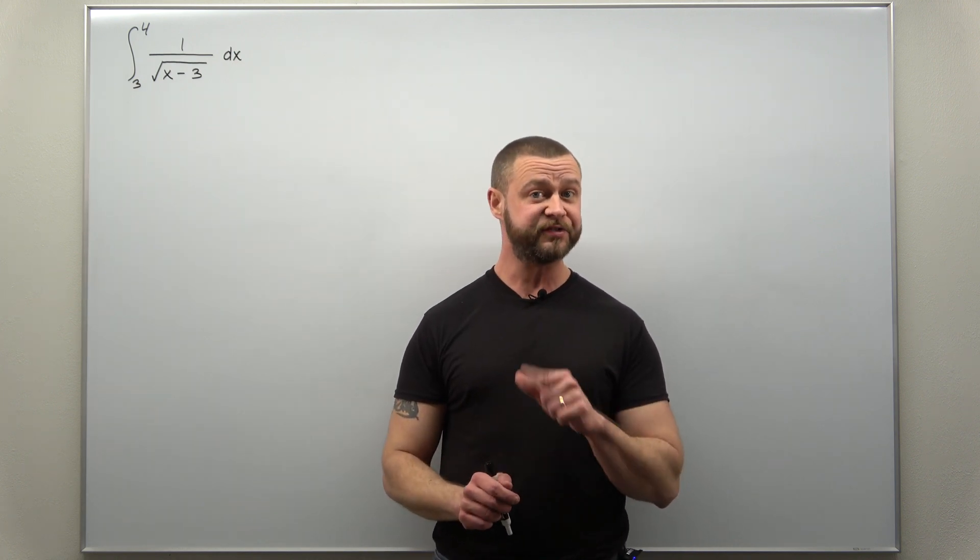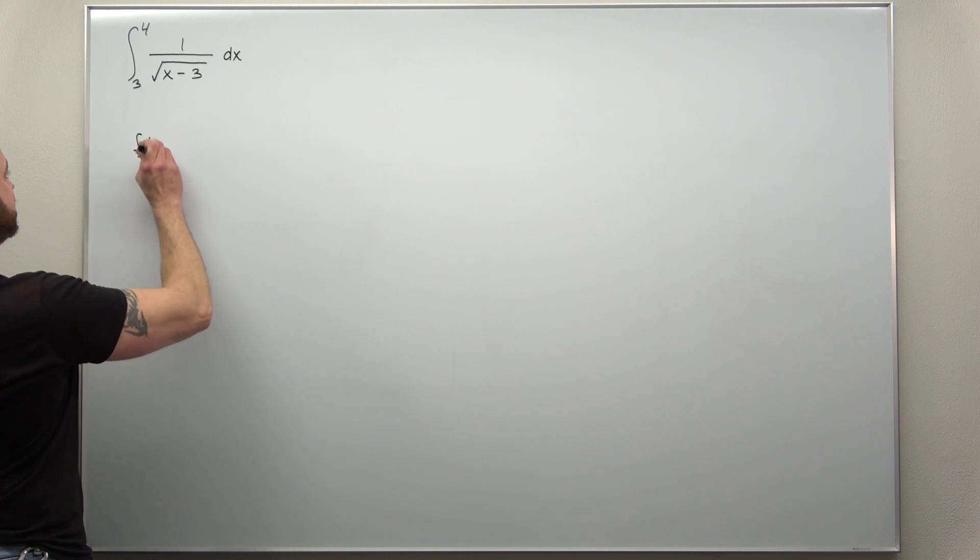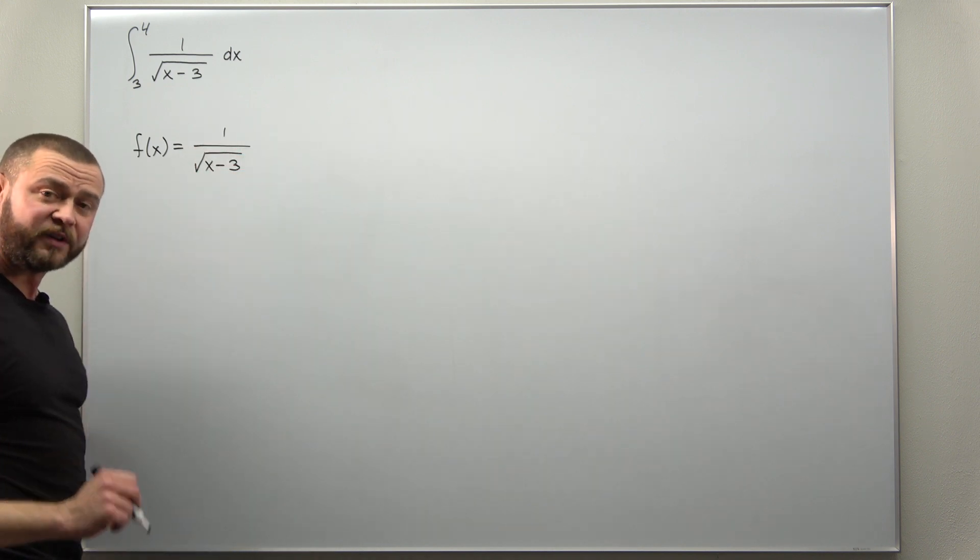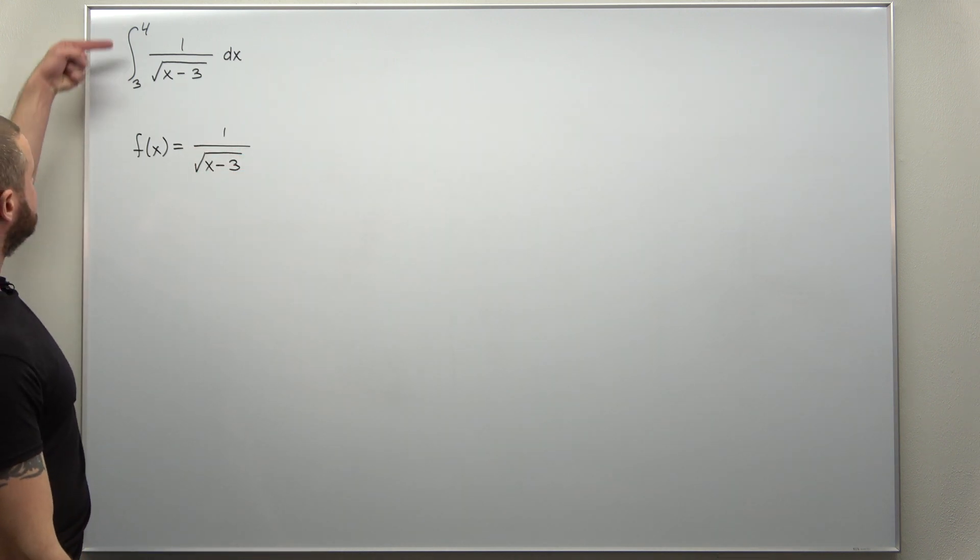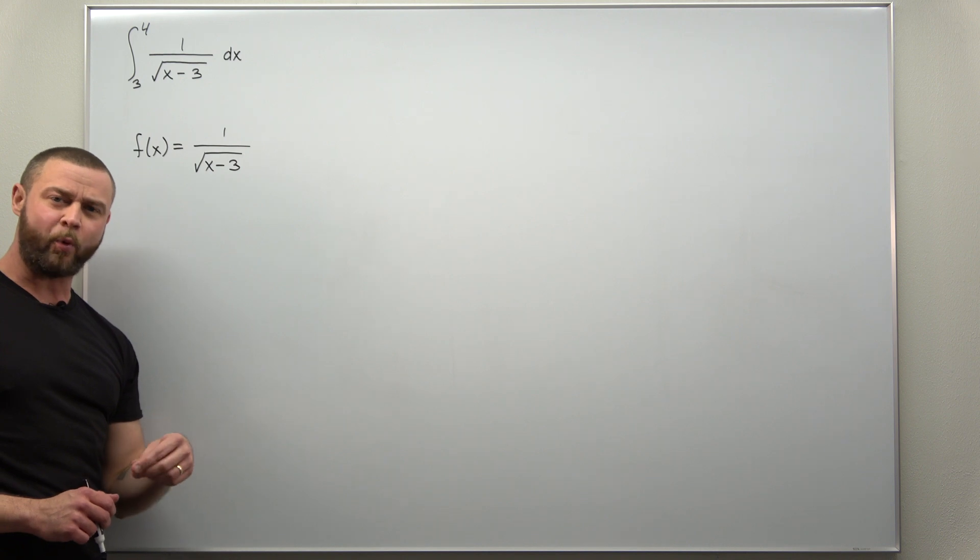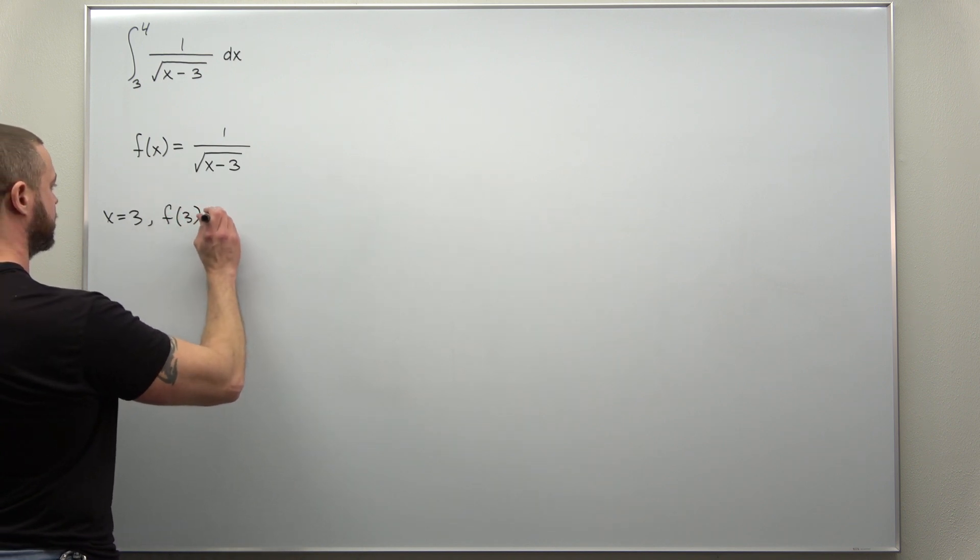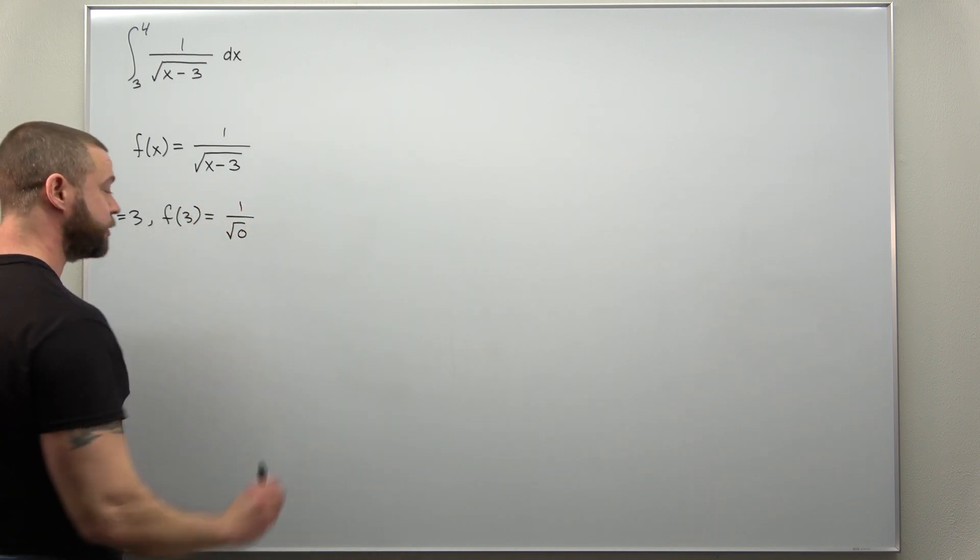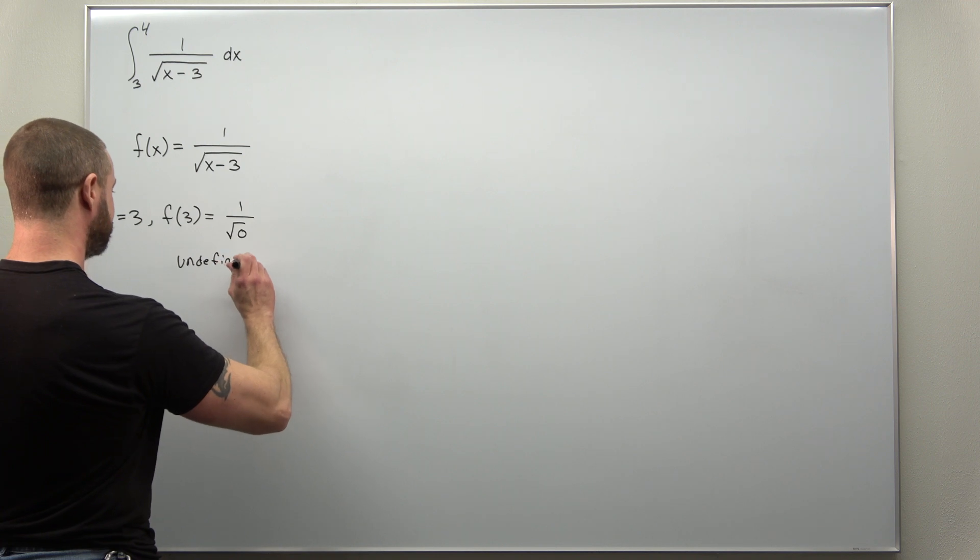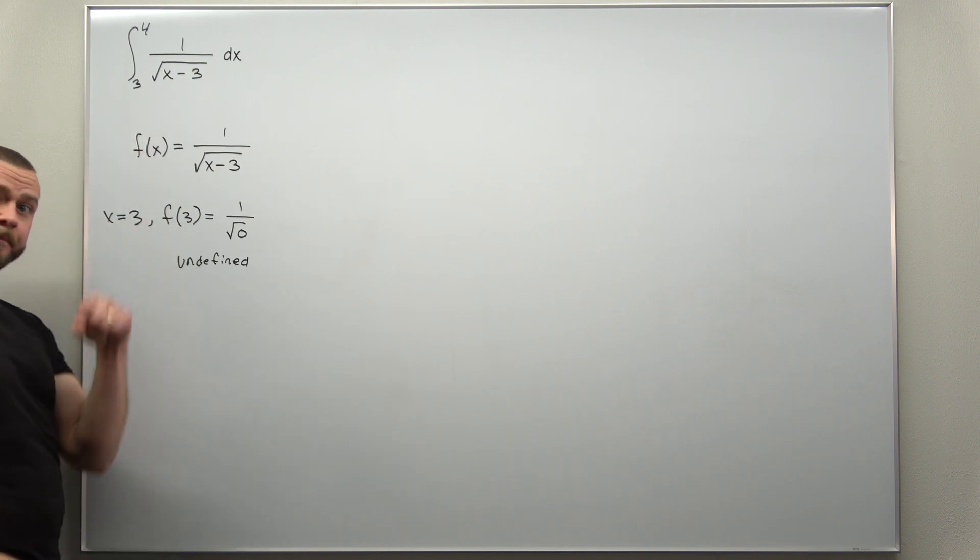One thing you always want to look for is with your function, let's call that f(x) which is 1 over the square root of x minus 3, always check what happens if you plug in the limits of your integral. You might find that there's something funny going on with one of them. Here you can see when I plug in x equals 3, we get 1 over the square root of 0, so the function here is becoming undefined at this endpoint 3, the left endpoint.